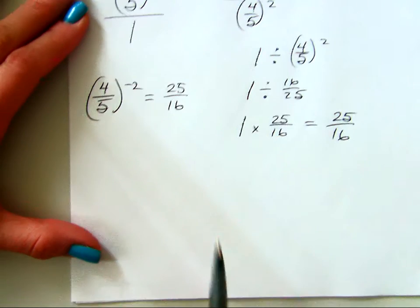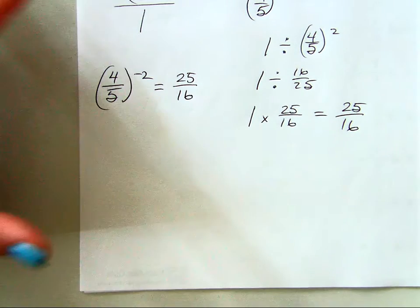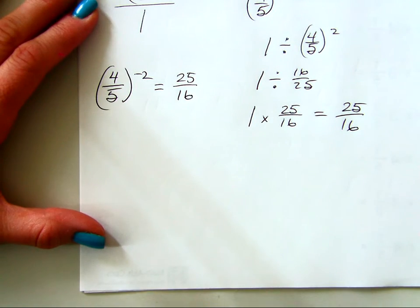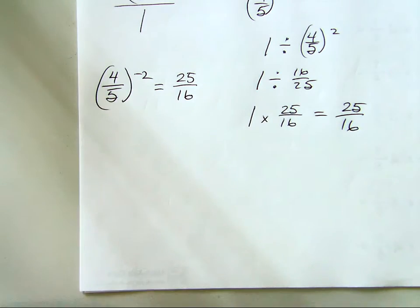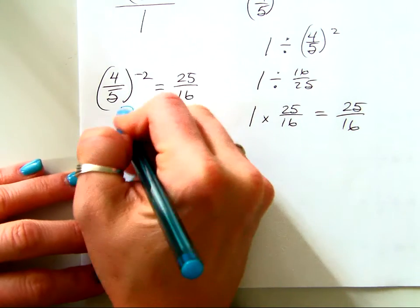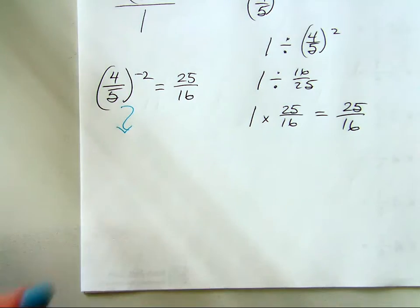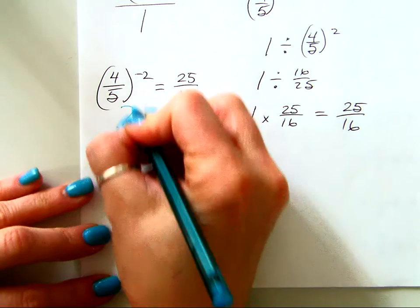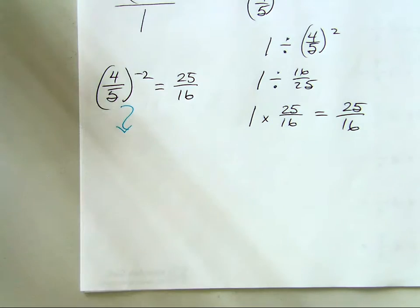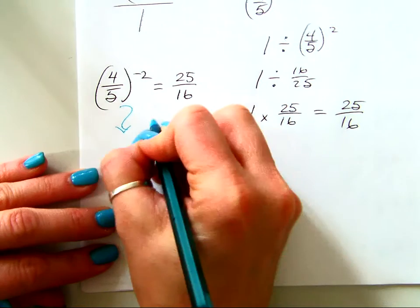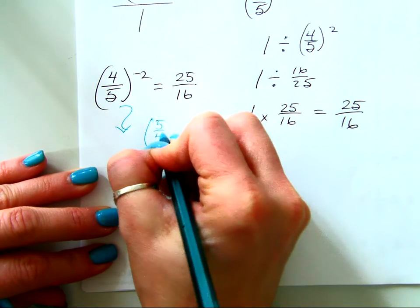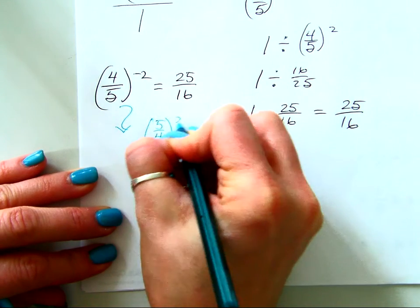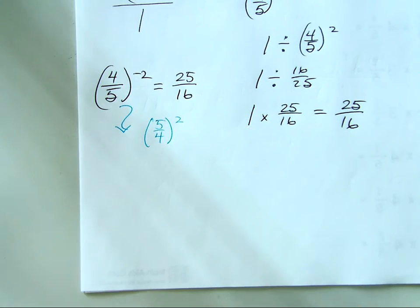Your shortcut is: take 4 fifths to the negative 2 power and really make it 5 fourths to the positive 2 power. Take the reciprocal of the fraction, and that turns the exponent positive. And it will give you the same answer.